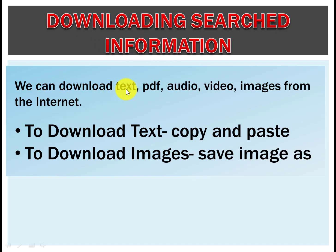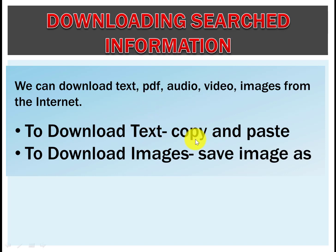Downloading searched information: once you have found some information, how can you download it? You can download text files, PDF files, audio files, video files, and images from the internet. To download text, just select the text from the website, copy it, and paste it into your Open Office Writer.